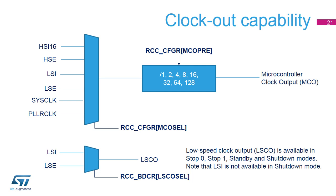The various clocks can be output on an I/O. The microcontroller clock output feature allows you to output on a pin one of these six clocks: HSI-16, HSE, LSI, LSE, SysClock, and PLL clock. The low-speed clock output, or LSCO, feature allows the output of the LSI or LSE clock on a pin. The low-speed clock output is available in stop 0, stop 1, standby, and shutdown modes. This is enabled by setting the LSCOEN bit in the RCC BDCR register. Note that LSI is not available in shutdown mode.